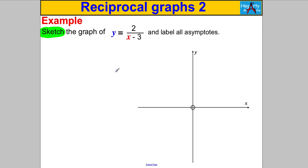The first thing we look for is the vertical asymptotes. You get those by deciding when you get an undefined y value — when are you dividing by 0? With reciprocal graphs, look at the denominator and decide what x value makes it 0. It's clear that x = 3 would be the asymptote, because 3 − 3 = 0.